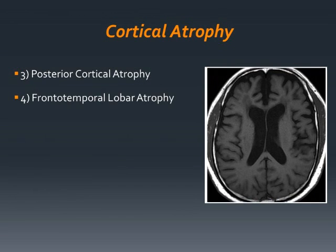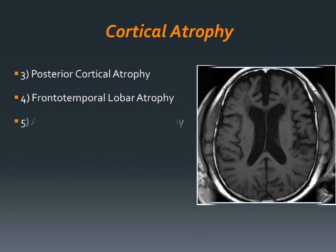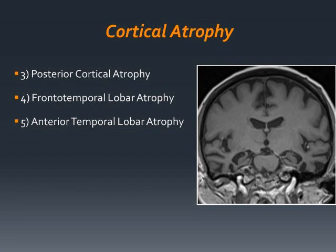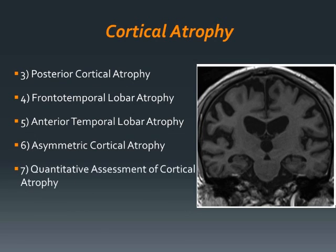Frontotemporal lobe atrophy was used in the assessment of frontotemporal dementia, and it is an example of behavioral variant frontotemporal dementia. It is important to understand that frontotemporal lobe atrophy scales have been developed with selective focus on the differential diagnosis of frontotemporal dementia, not for its differentiation from Alzheimer's disease. Semantic dementia is characterized by semantic memory impairment with preservation of episodic memory, and should primarily involve the left anterior inferior and anterior middle temporal lobe, with relative sparing of the posterior temporal lobe, as opposed to generalized atrophy in Alzheimer's disease, which can be a helpful differential diagnostic clue.